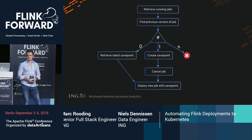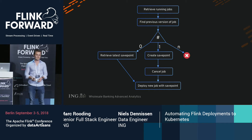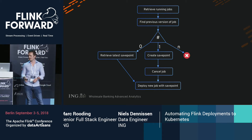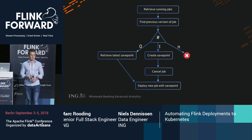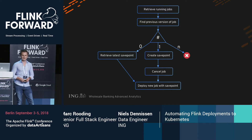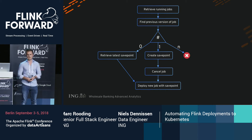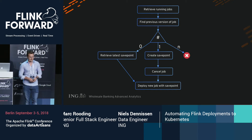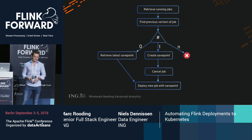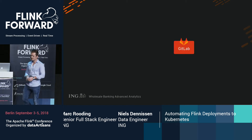If we were to automate it, the first thing we'd want to do is retrieve the running jobs on our cluster, then determine which version of the job we're trying to update. Our jobs include a version number, so we look at a prefix of the job name. Based on the count: if no jobs are running we deploy; if one job is running we create a savepoint, cancel the job, and deploy the new version with the latest savepoint. If N jobs are running, we error out so your pipeline shows an error for manual intervention.